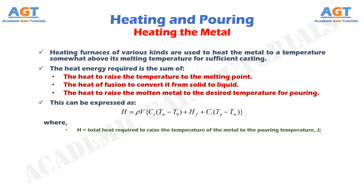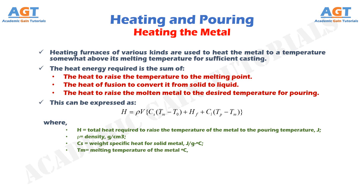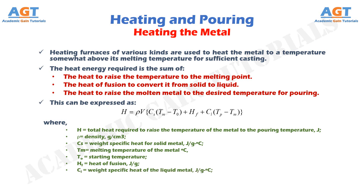Where: H is the total heat required to raise the temperature of the metal to the pouring temperature, expressed in Joules. Rho (ρ) is the density, expressed in grams per cubic centimeter. Cs is the weight specific heat for solid metal, expressed in Joules per gram degree Celsius. Tm is the melting temperature of the metal, expressed in degree Celsius. T0 is the starting temperature. Hf is the heat of fusion, expressed in Joules per gram. Cl is the weight specific heat of the liquid metal, expressed in Joules per gram degree Celsius. Tp is the pouring temperature, expressed in degree Celsius. And V is the volume of the metal being heated, expressed in cubic centimeter.